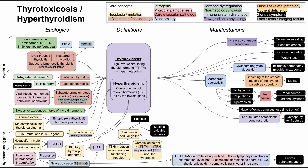Thyroid hormone can also affect bones. T3 in particular stimulates osteoclastic bone resorption, which may manifest as osteopathy. Patients may have fractures, especially elderly or female patients who may already be predisposed with osteopenia, and hyperthyroidism can worsen that situation.